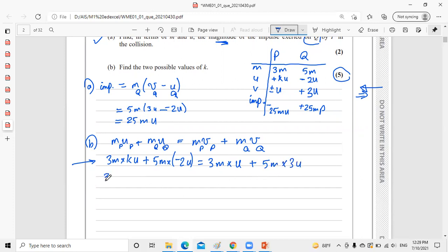Here it will be 3K. If I cancel M with M and U with U, what's left is 3K minus 10 equals 3 plus 15. So 3K minus 10 equals 18. Let's move: 18 plus 10 equals 28, so 3K equals 28. The first answer: K equals 28 divided by 3.